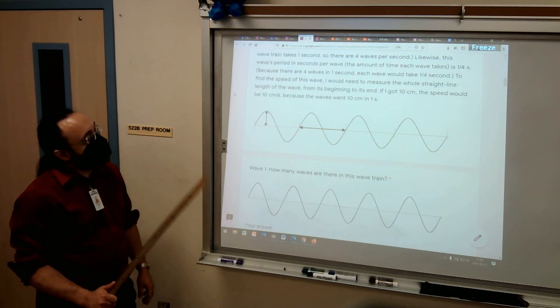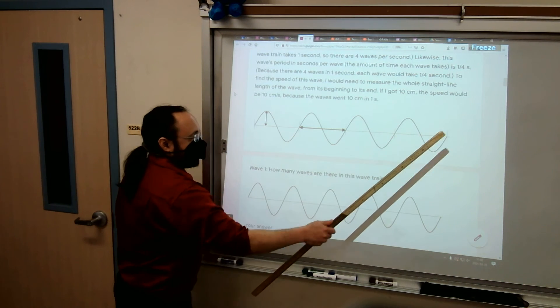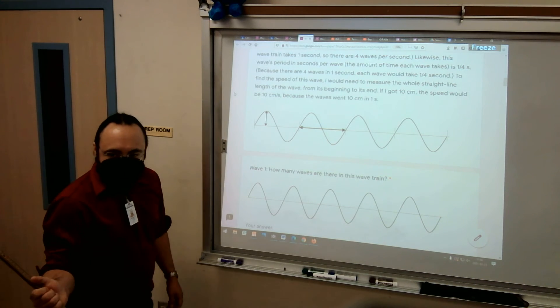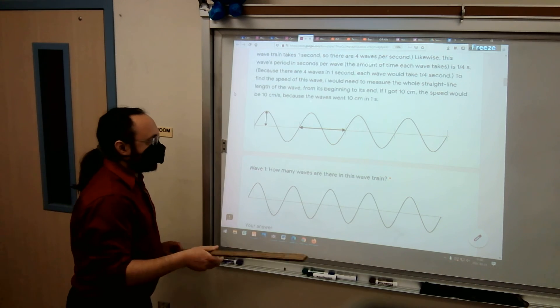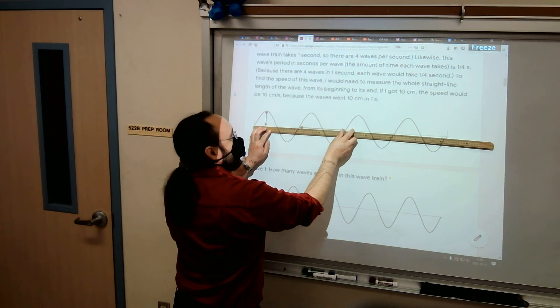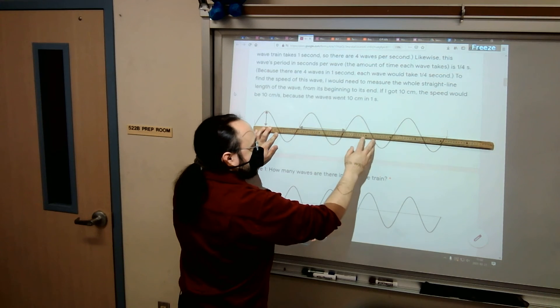Another way that we can use this wave train takes one second total is to figure out the speed. There is a formula for wave speed. We'll do that later. What I want y'all to do for wave speed now is to measure how far this wave goes in one second, and then it's that many meters per second.